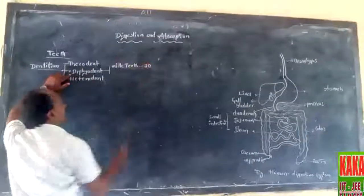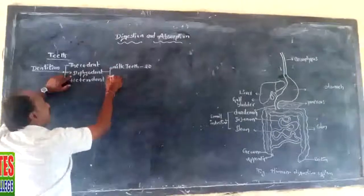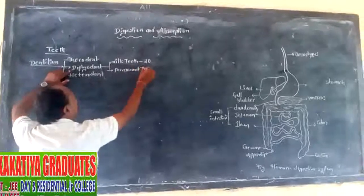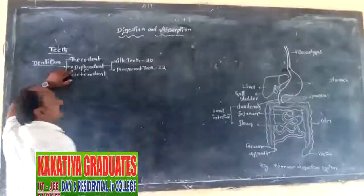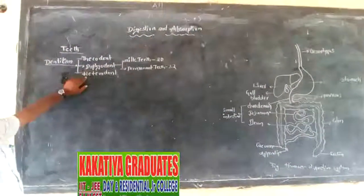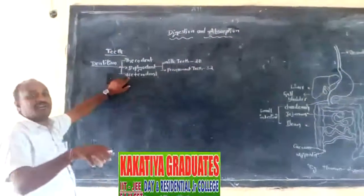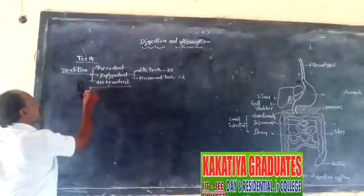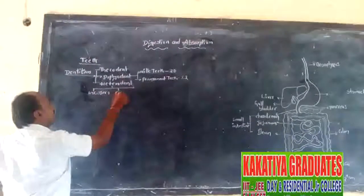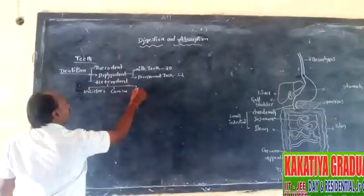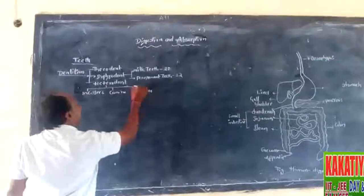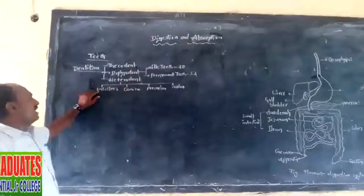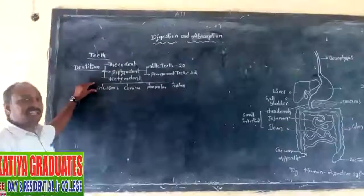The milk teeth are replaced by permanent teeth. Permanent teeth are 32 in adult humans. The next type is heterodont. Here 4 types of teeth are located at the jaw: incisors, canines, premolars, and molars.